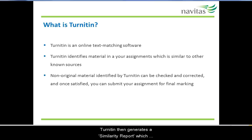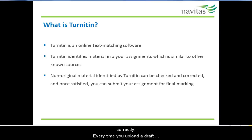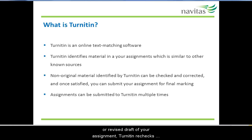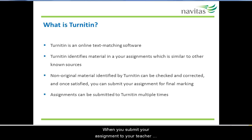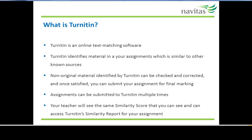Turnitin then generates a similarity report, which shows a similarity score in percent and highlights what similar text it has found, as well as the primary source of the matching text. You can use the similarity report to correct any written text which is not referenced correctly. Every time you upload a draft or revised draft of your assignment, Turnitin rechecks it and generates a new similarity report. When you submit your assignment to your teacher for final marking, Turnitin generates a final similarity report, which you and your teacher will have access to.